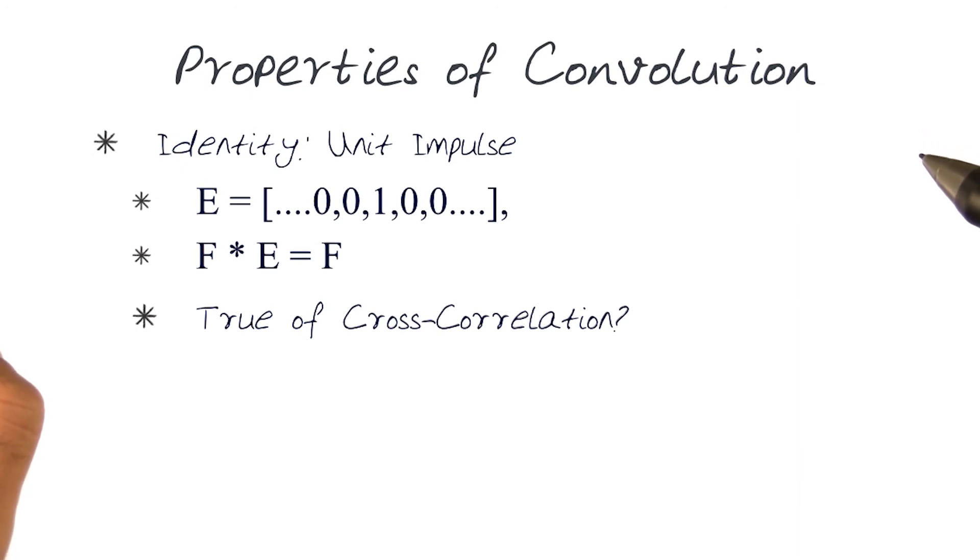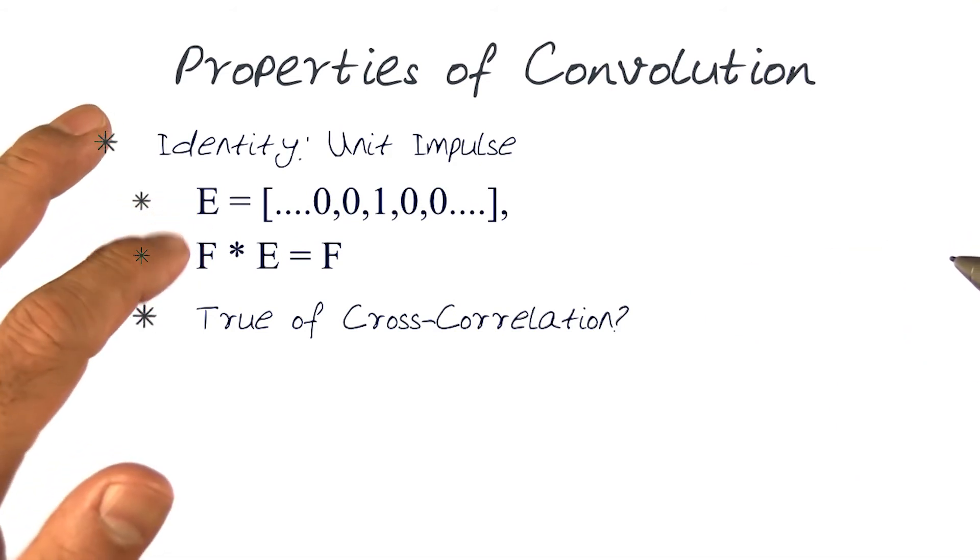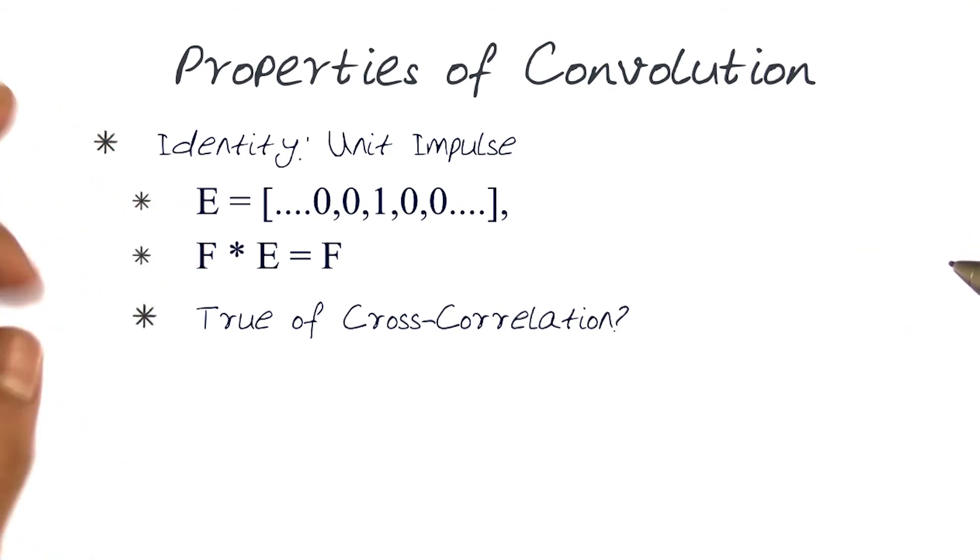Another property, and I think we've experimented with this already. If you take an identity, a unit response, in this case shown by the simple thing, and if I actually do a convolution of an image or a function with an identity, we get the original one back. Question for you folks to think about on the forums is, is that true for cross correlation? I look forward to seeing you discuss that there.